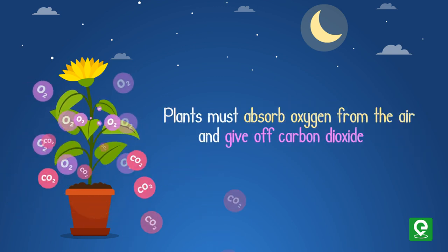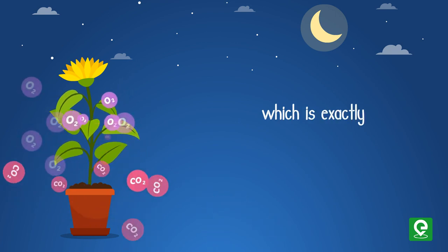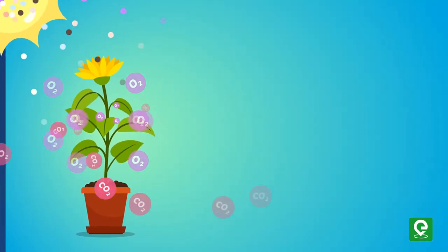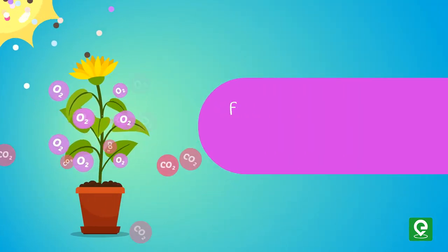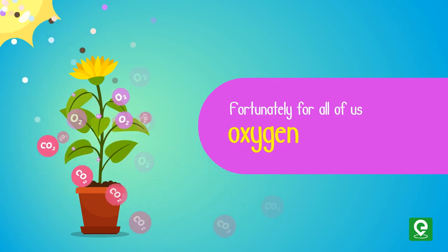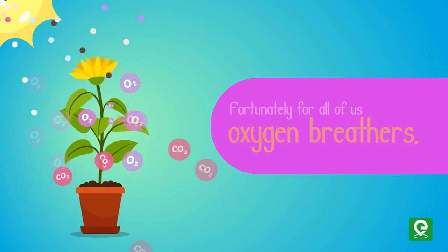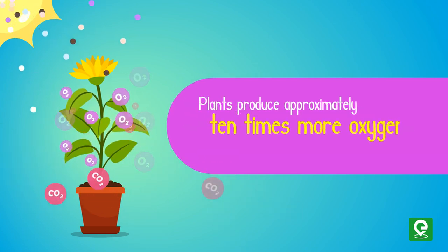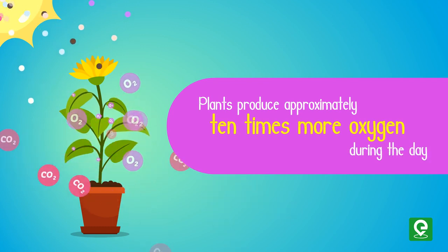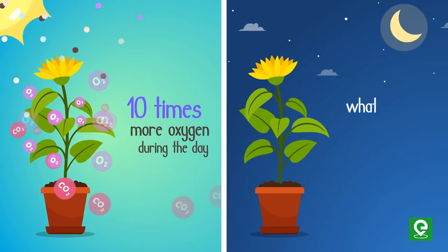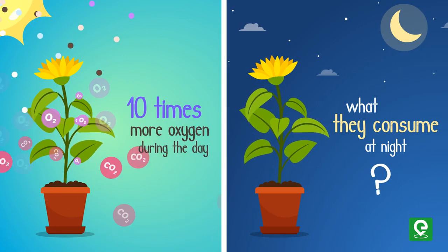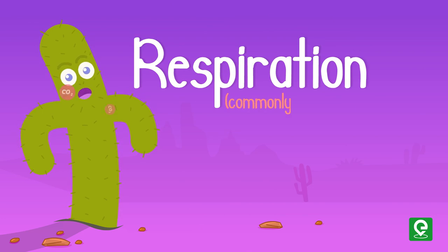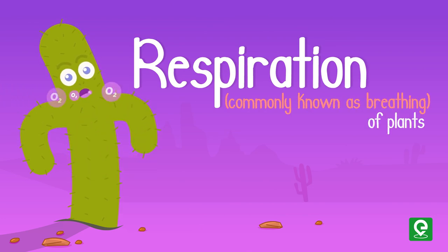Plants give off carbon dioxide at night, which is exactly what animals do. Fortunately for all of us oxygen breathers, plants produce approximately 10 times more oxygen during the day than what they consume at night. So let's study more about respiration, commonly known as breathing of plants.